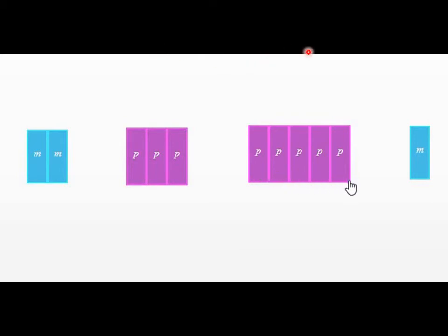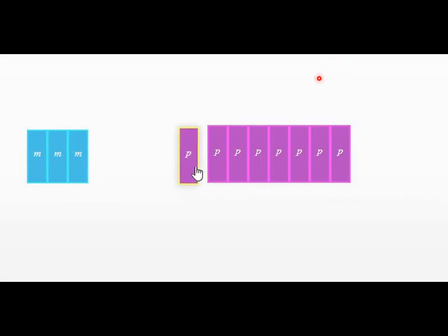So remember, if it is that you have two different variables, we group the like terms. We put the 2M with the M. And remember, M is the same thing as 1M. M is the same thing as 1M from the demonstration that was just shown. And then we put our 3P with our 5P, and that gives us an answer of 3M plus 8P.